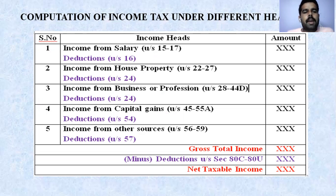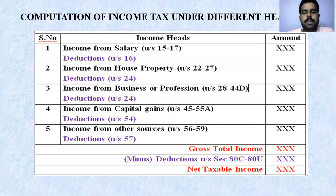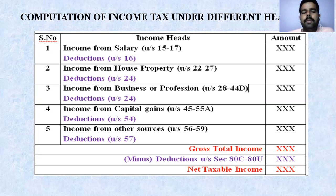Income from house property is covered under sections 22 to 27, with deductions also applicable — after deductions the final amount is recorded. Income from business or profession falls under sections 28 to 44D, with deductions under section 24. Income from capital gains is under sections 45 to 55A, with deductions under section 54. Income from other sources falls under sections 56 to 59, with deductions under section 57. After applying deductions to each individual head, the resulting total is called the Gross Total Income.